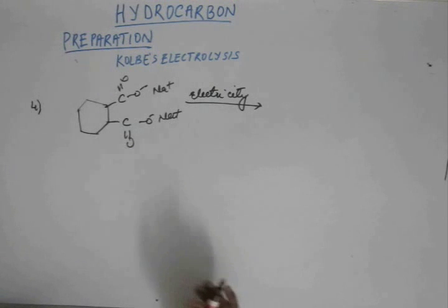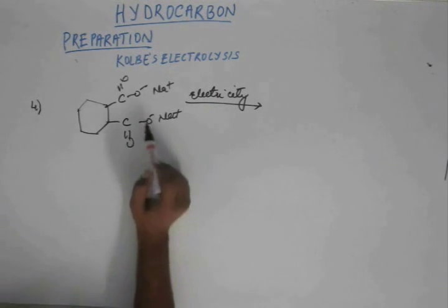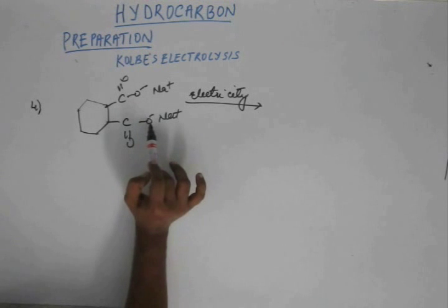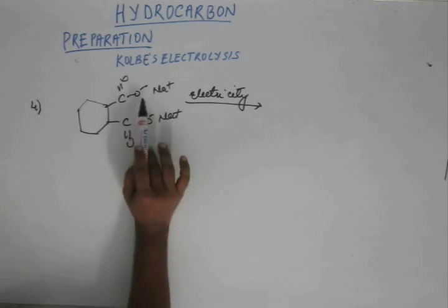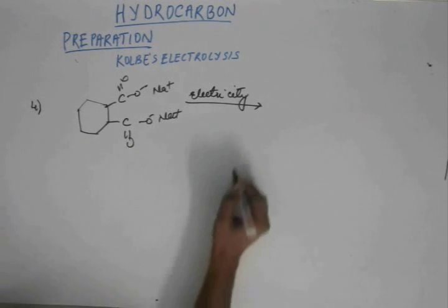There are 2 carboxylate ions and the mechanism that we studied for 1 carboxylate ion will follow for both the carboxylate ions. So there will be oxidation at both the ions, there will be removal of carbon dioxide gas at both the ions and there will be generation of free radicals at both the ions.